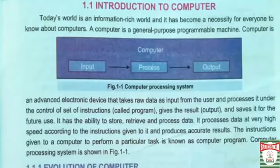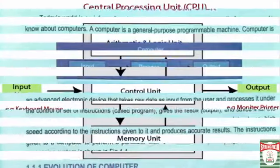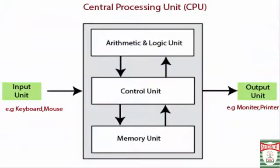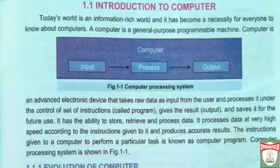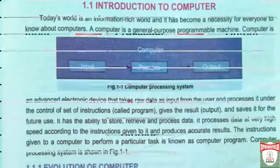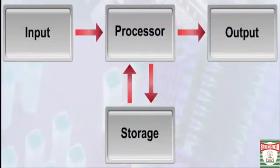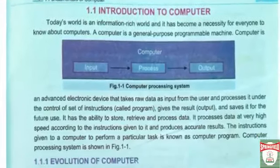The next topic is introduction to computer. Today's world is an information-rich world and it has become a necessity for everyone to know about computers. A computer is a general purpose programmable machine — an advanced electronic device that takes raw data as input from the user and processes it under the control of a set of instructions called a program, gives the result as output, and saves it for future use. It has the ability to store, retrieve, and process data at very high speed according to instructions given to it and produces accurate results. The instructions given to a computer to perform a particular task are known as a computer program.